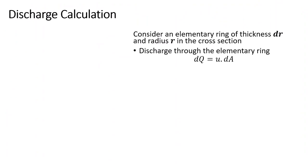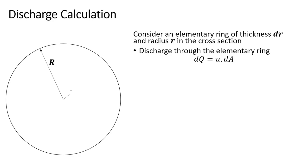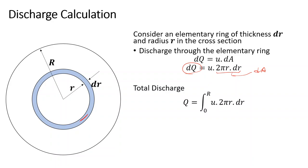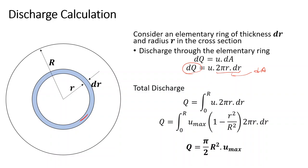Based on the velocity equation, we can calculate the discharge in the pipe. We consider a cross-section of the pipe with an elementary annular strip of radius r and thickness dr. The discharge through this strip is dq = u * 2πr * dr. Integrating from 0 to R, the total discharge is found to be: Q = (π/2) * R² * u_max.